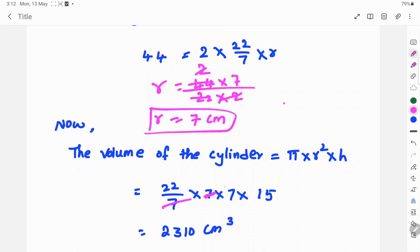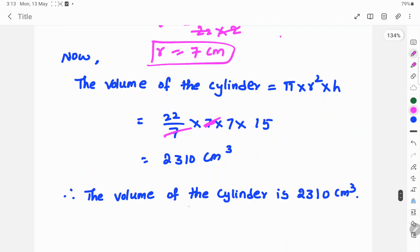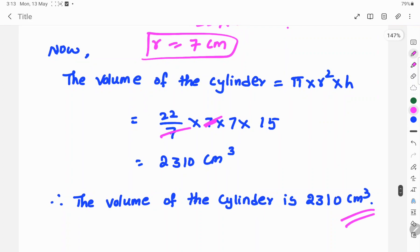These sevens cancel, and then we have 22 times 7 times 15. Multiplying these numbers gives 2310 cm³. Therefore, the volume of the cylinder is 2310 cm³.